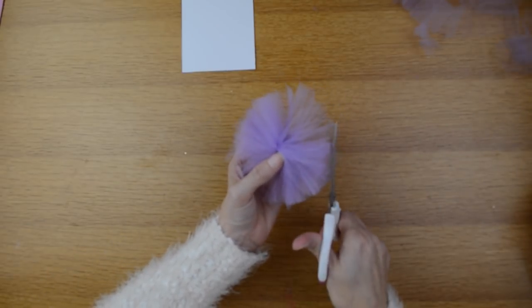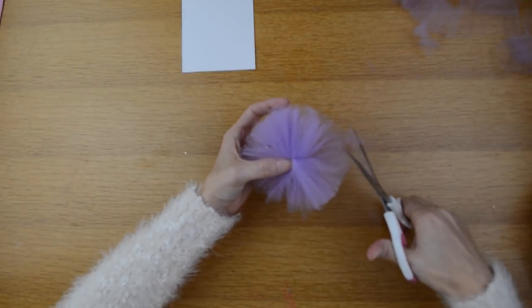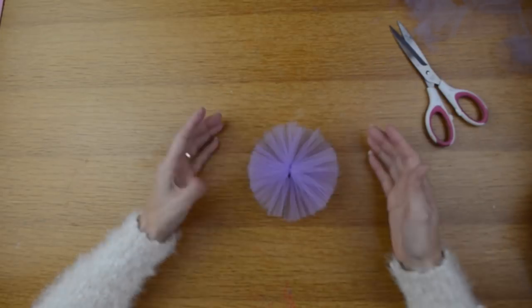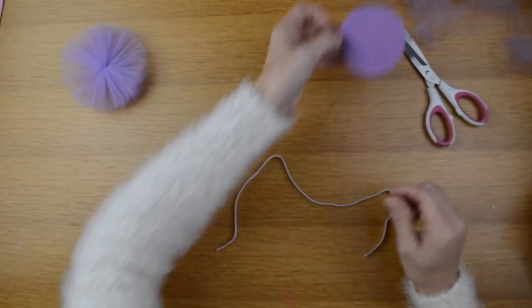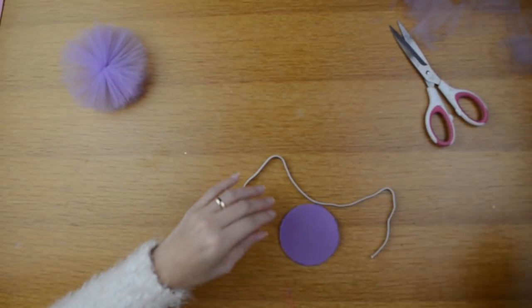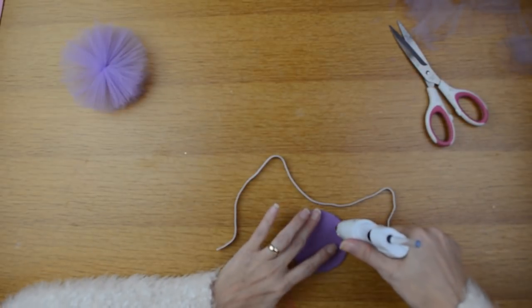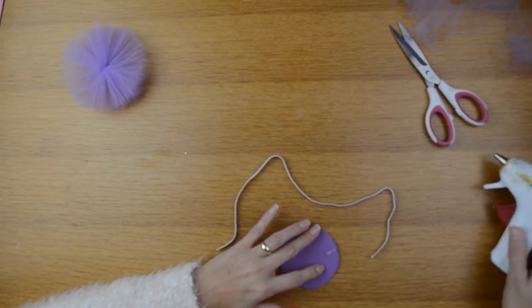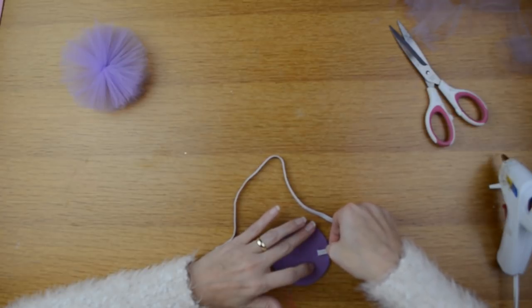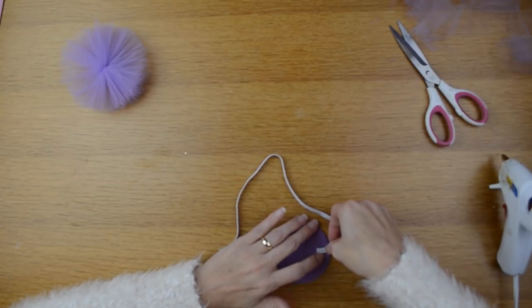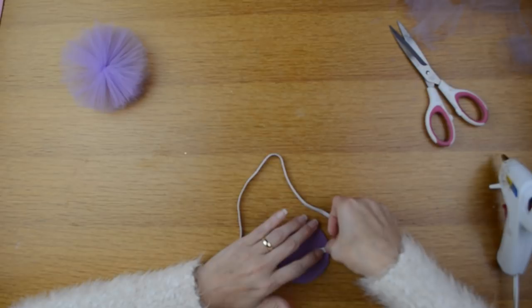Next I'm going to trim it up, make sure it's even around. After you have it all trimmed up and neat, you're going to take your elastic and that piece of felt. Take your hot glue and hot glue each side onto the felt. I'm doing about a half inch on each side.